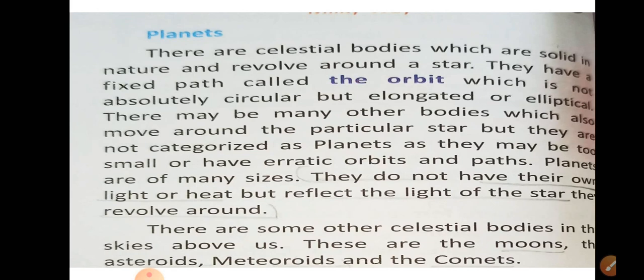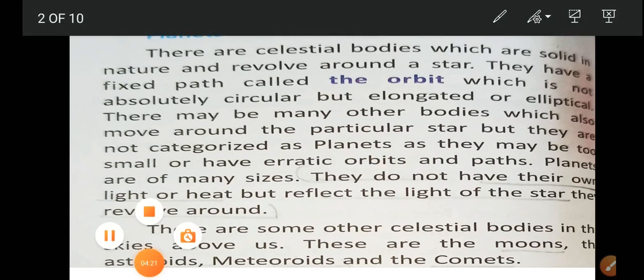There are some other celestial bodies in the skies above us. There are the moons, the asteroids, the meteoroids, and the comets. These are all names of celestial bodies found in our universe.